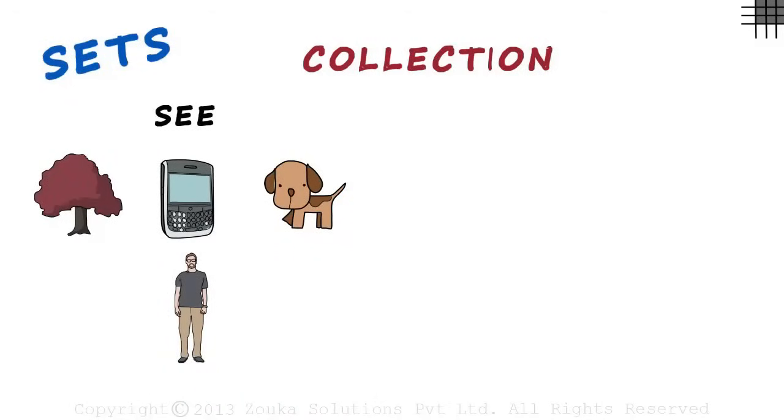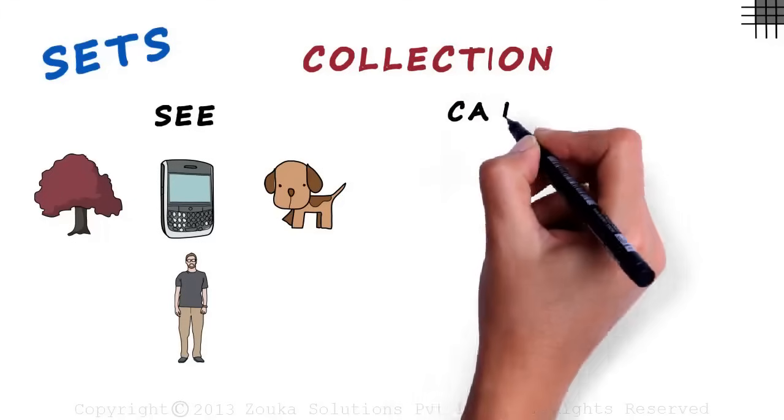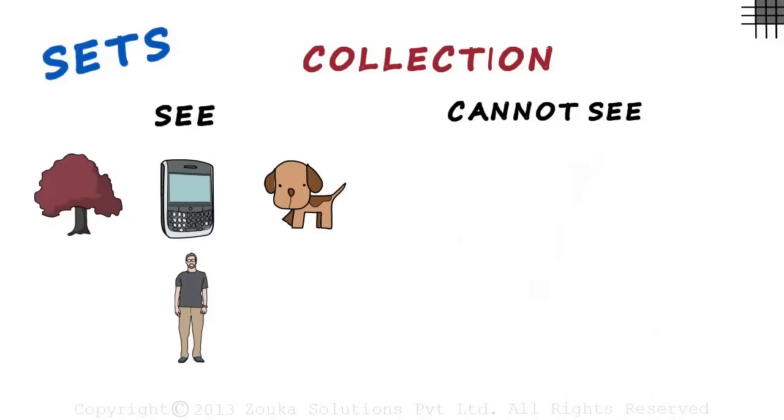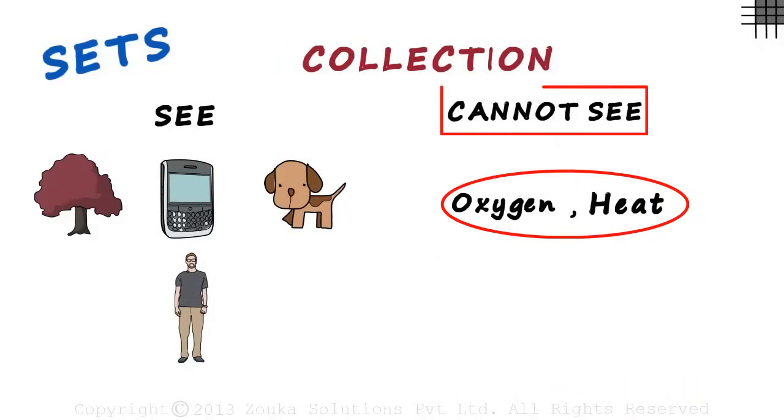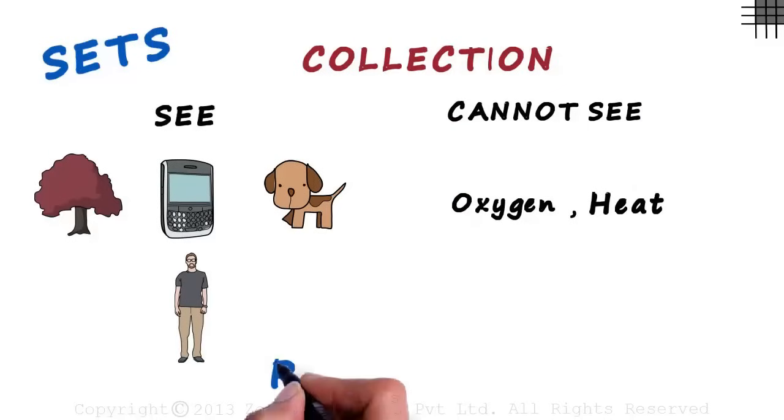And what if you were asked to write down a list of things you cannot see? You would probably write oxygen, heat, and so on. These are the things you cannot see. A set is a collection of elements, yes, but they have to be related in some way.